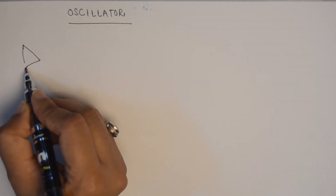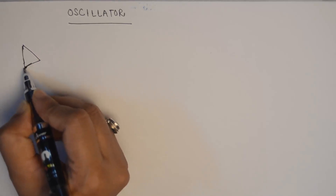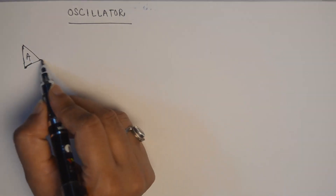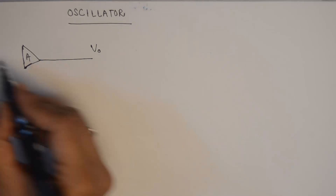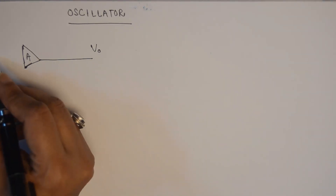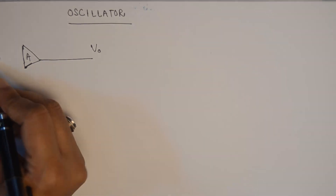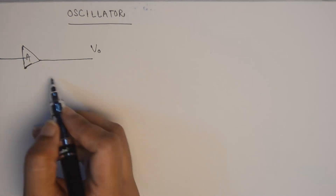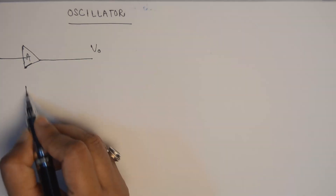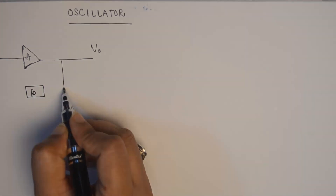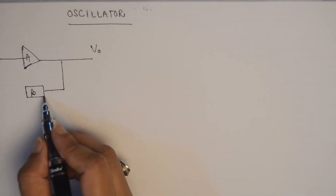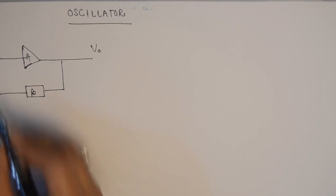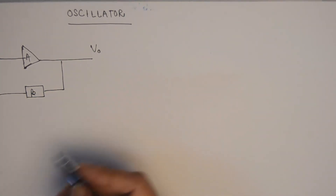Let us say I have an amplifier here and its gain is A. The output voltage is V0, and I take a summing point here to which I am giving the input voltage Vin, which is also going as input to this amplifier. A part of this output is fed back to the input via a feedback circuit having gain beta, and this is provided to the input.